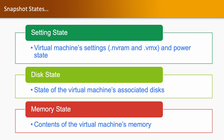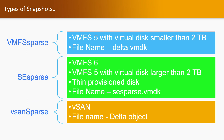Snapshot states: there are three states. The first is the settings state, the second is the disk state, and the third is the memory state, which is optional. In the settings state, it takes the snapshot of your virtual machine settings and power state, such as NVRAM and VMX configuration files. In the disk state, it takes the snapshot of the virtual machine disk, like the VMDK disk which has virtual machine data. The third state is the memory state — if you have checked that option, it takes the snapshot of memory as well, which contains the virtual machine's memory.